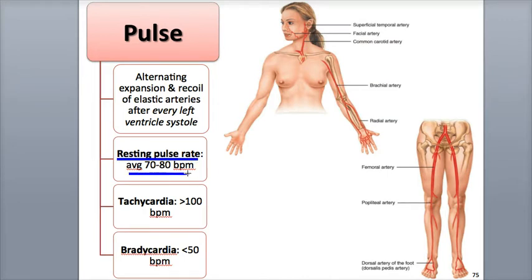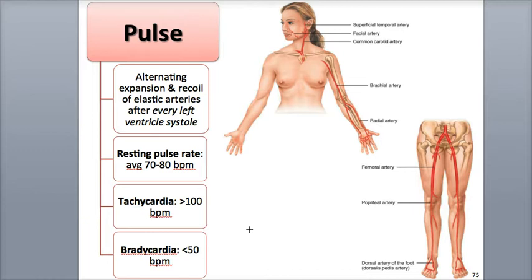An average resting pulse rate is around 70 to 80 beats per minute. A rapid resting heart rate or pulse rate exceeding 100 beats per minute is called tachycardia. A slow resting heart rate or pulse rate below 50 beats per minute, often seen in endurance athletes like marathon runners, is called bradycardia.